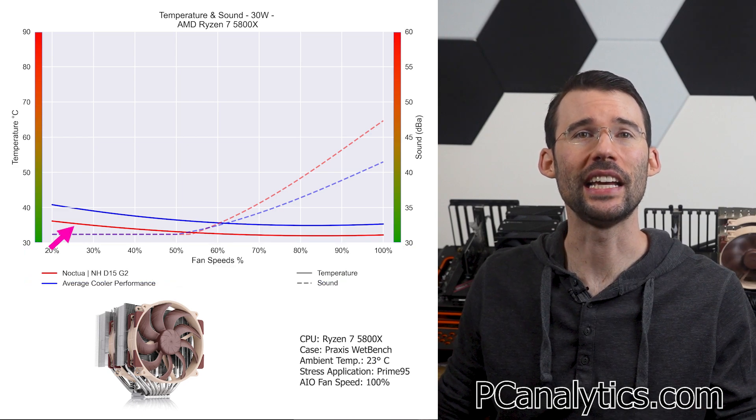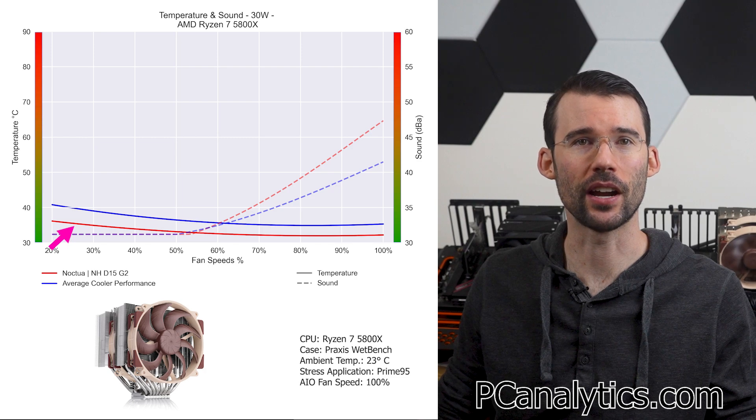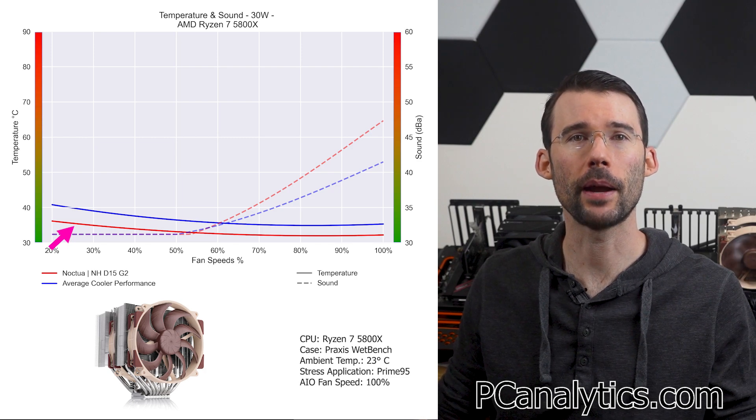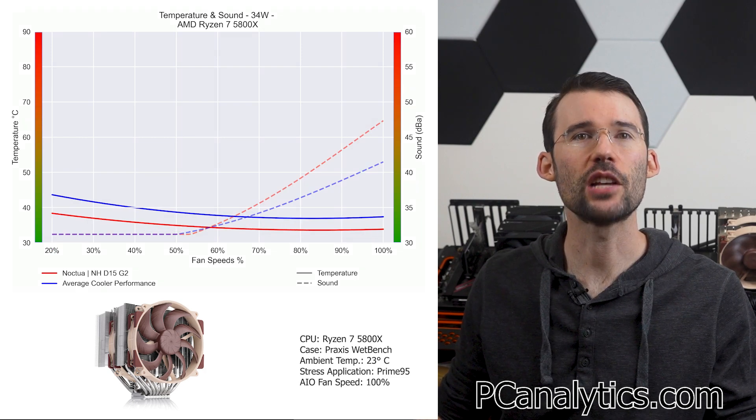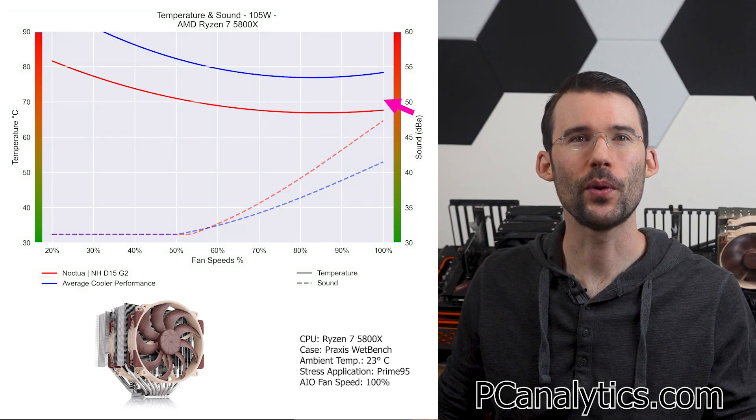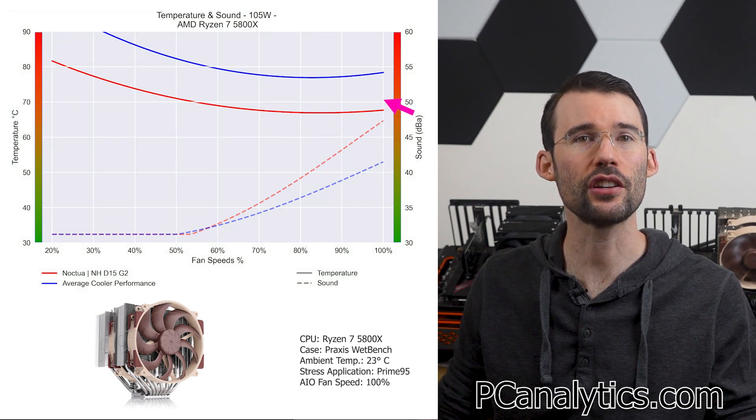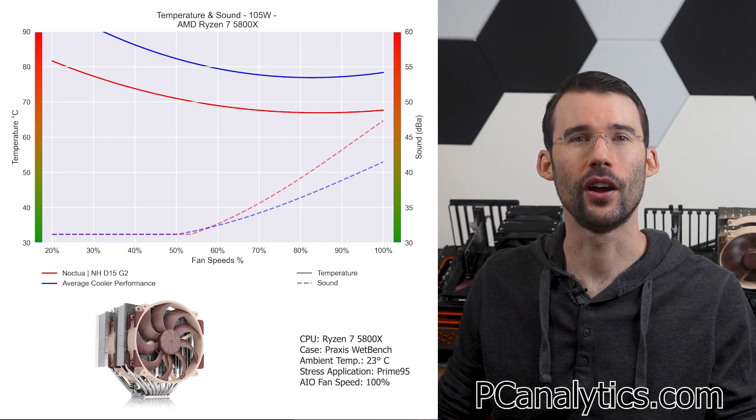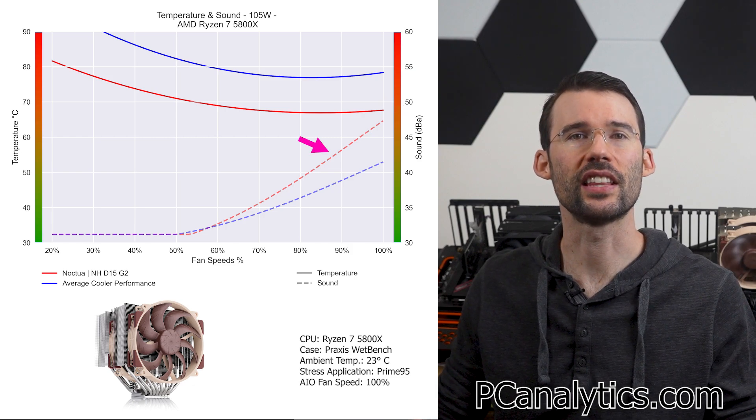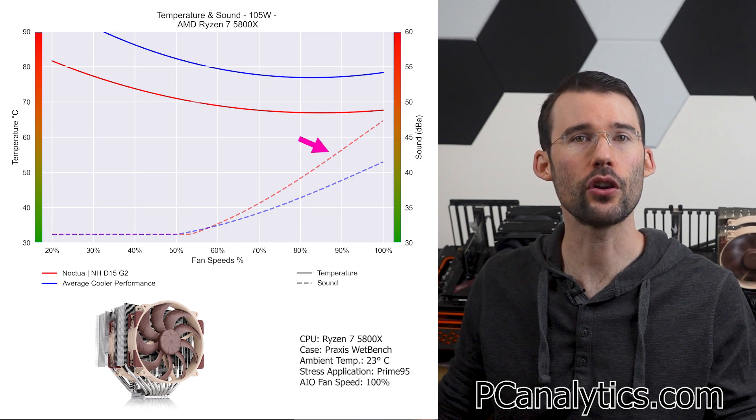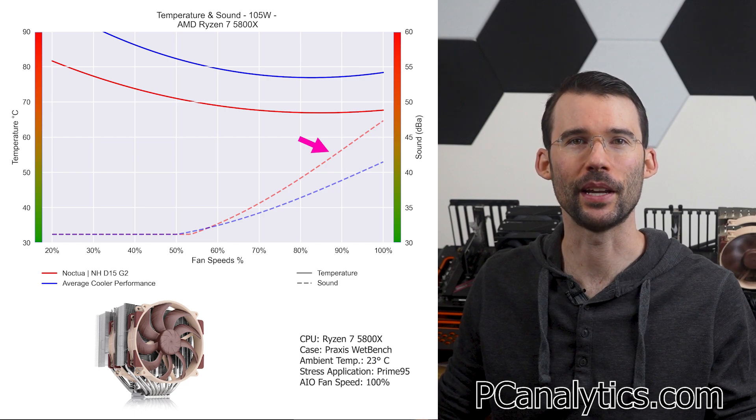At idle, the Noctua NH-D15G2 in red provides materially better cooling compared to the average cooler in blue. As we turn up the heat to 105 watts, we can see that this gap materially widens, with the Noctua being over 10 degrees cooler across the board. However, this comes at the cost of the NH-D15G2 being noticeably louder, especially at the higher RPMs.